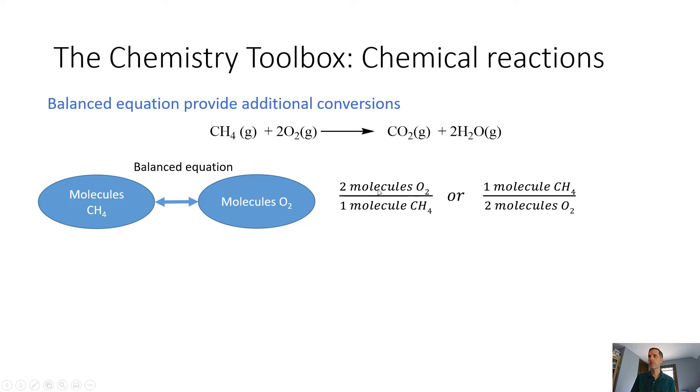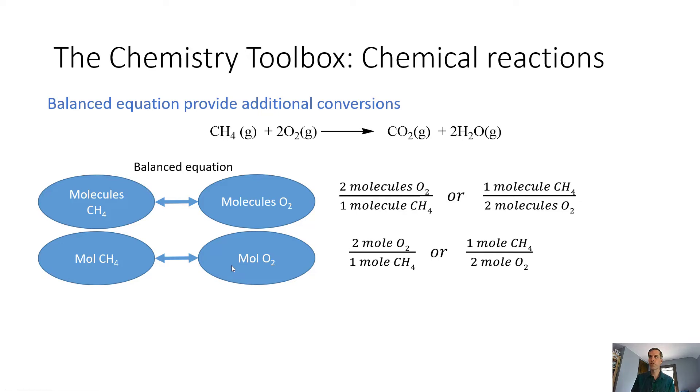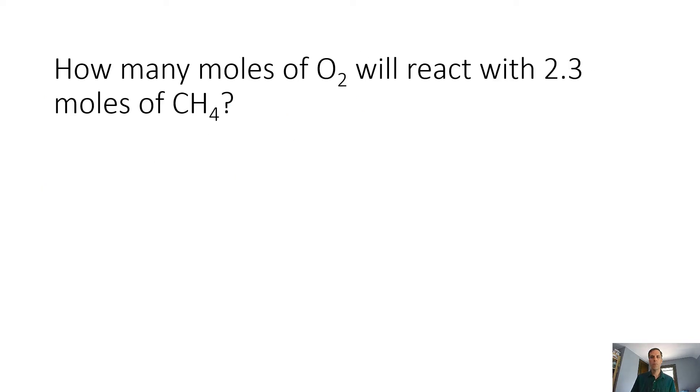We've got two different relationships here. We've got two moles of O2 per one molecule of CH4, methane, or we can flip that around and do it the other way. Of course, now you also know that we could just do this directly with moles - there's a relationship there. This is much more common that we tend to do in chemistry and just use it right in terms of moles. When we have a balanced equation, that provides us with a bit of information.